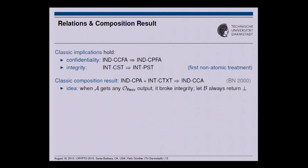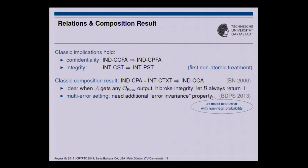There is also the classic composition result for channels: CPA confidentiality plus ciphertext integrity gives the stronger CCA confidentiality. The idea is that whenever in the CCA setting the decryption oracle produces anything other than an error, it breaks integrity — so you can simulate this oracle by outputting errors. In 2013 the multi-error setting was considered: if more than one error might be output, you can resurrect the composition result by assuming at most one error is visible to the adversary.